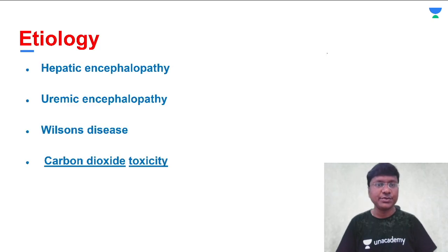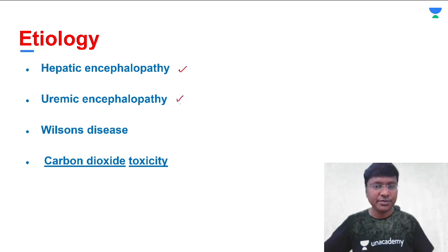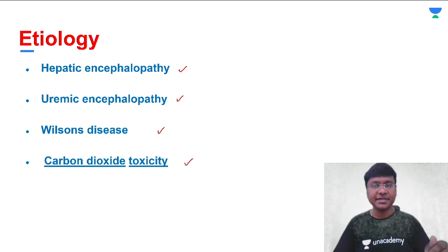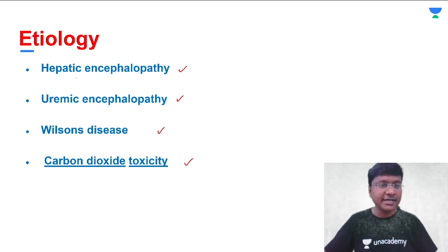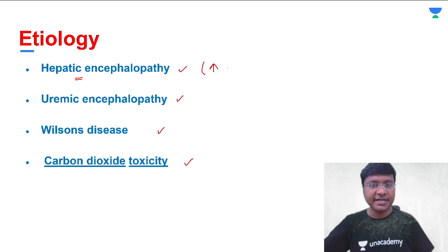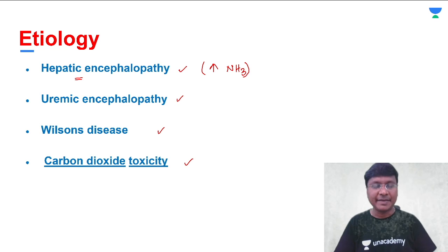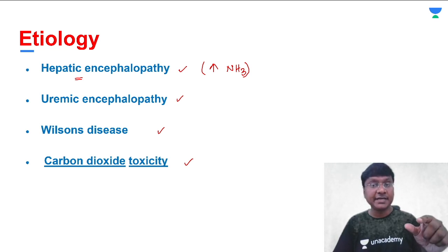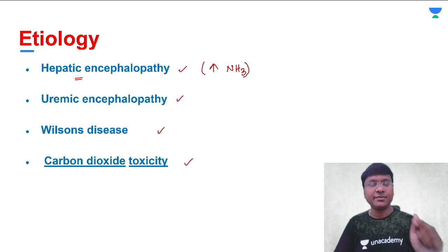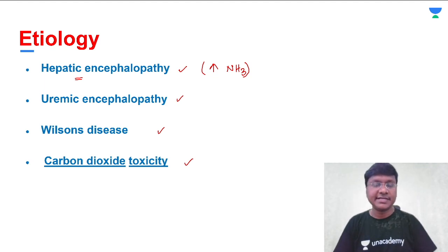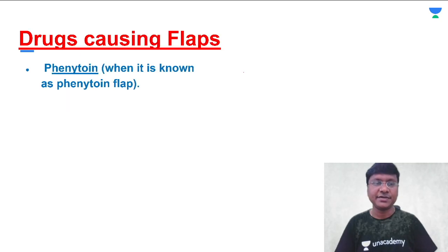What are the clinical conditions where you will have flapping tremors? In hepatic encephalopathy, uremic encephalopathy, Wilson's disease, and carbon dioxide toxicity (hypercapnia), you will have flapping tremors. In hepatic encephalopathy, it is mainly because of increase in ammonia levels. This ammonia crosses the blood-brain barrier and gets deposited within brain structures, causing dysfunction and resulting in flapping tremors.